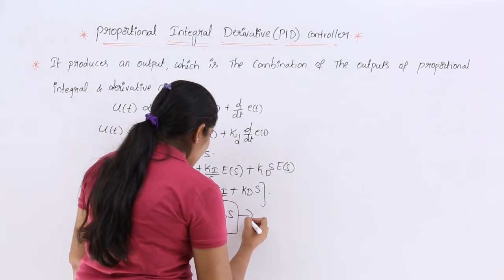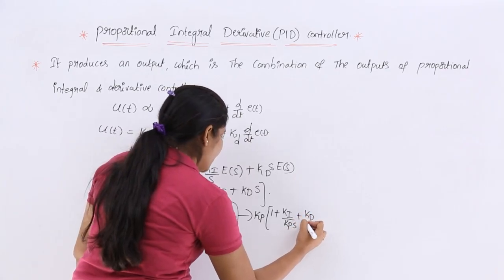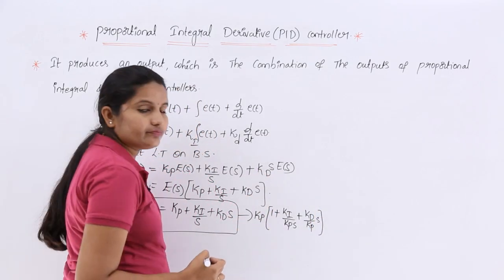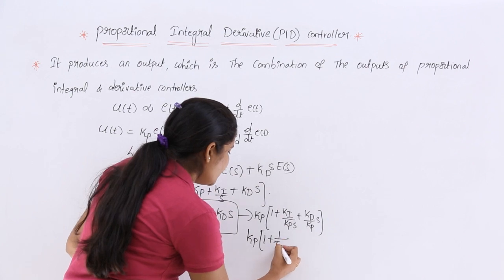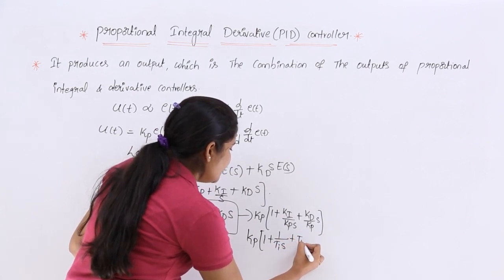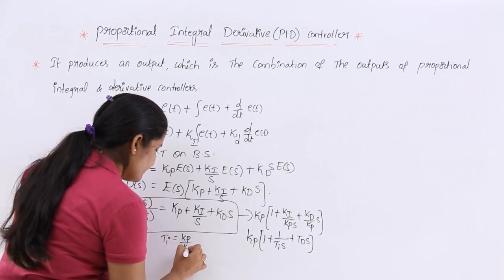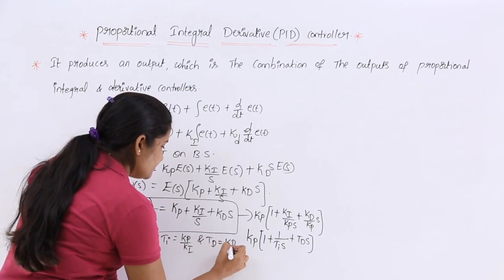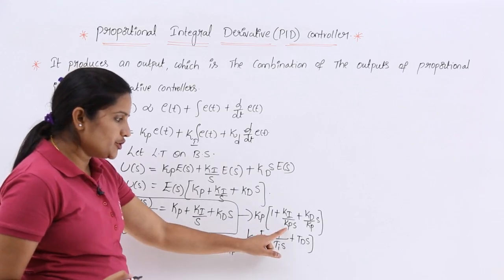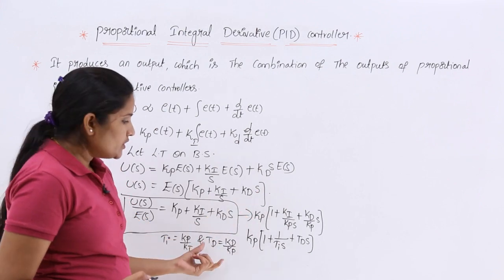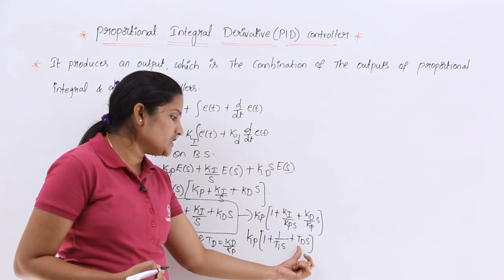For simplification, we factor out Kp: the transfer function becomes Kp·[1 + Ki/(Kp·s) + (Kd/Kp)·s]. We define Ti = Kp/Ki and Td = Kd/Kp. Substituting these, the transfer function of the PID controller is: Kp·[1 + 1/(Ti·s) + Td·s].